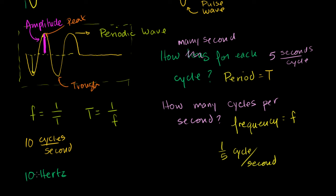Frequency is equal to 1 over the period, and period is equal to 1 over the frequency. So if I told you I'm vibrating the left end of this rope at 10 cycles per second — 10 hertz — my period would be 1 over 10, or one-tenth of a second per cycle. If I can do that 10 times in a second, it takes me one-tenth of a second to do it each time.